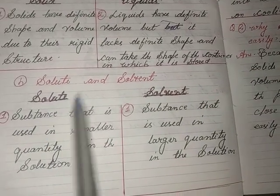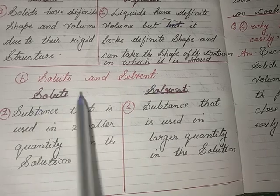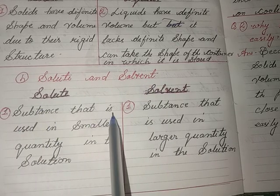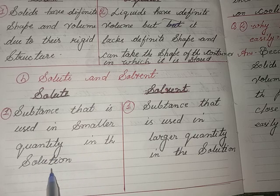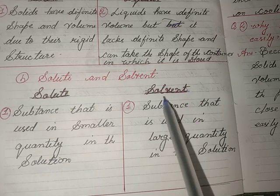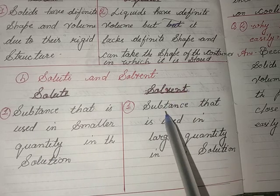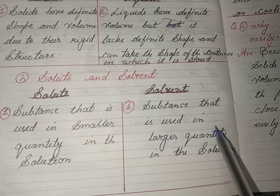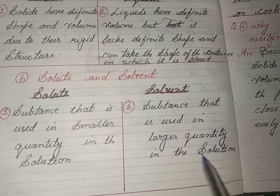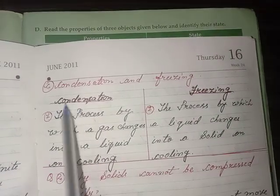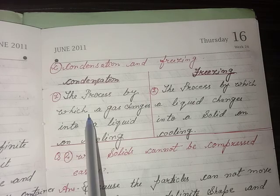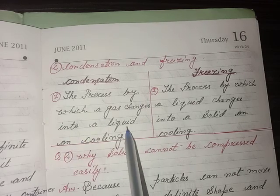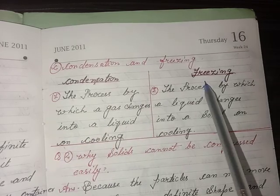Differentiate between solute and solvent. Solute: the substance that is used in smaller quantity in the solution. Solvent: the substance that is used in larger quantity in the solution.